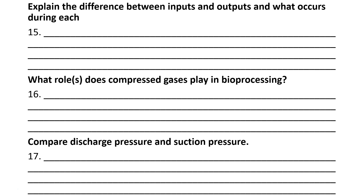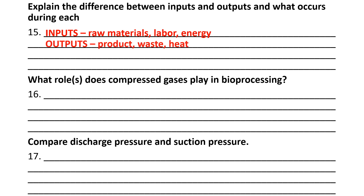Explain the difference between inputs and outputs and what occurs during each. Inputs include your raw materials, labor, and energy. Outputs include your product and waste. There's always going to be some waste heat — as the second law of thermodynamics states, when energy changes form, some of it is converted into low quality waste heat. Note that waste and heat are two separate output categories.